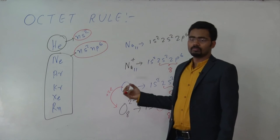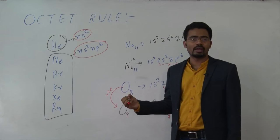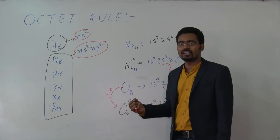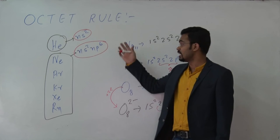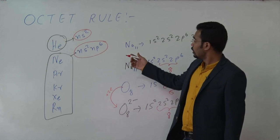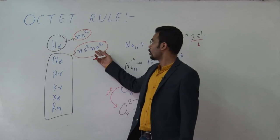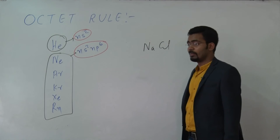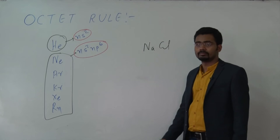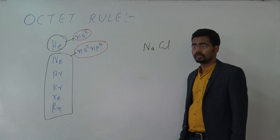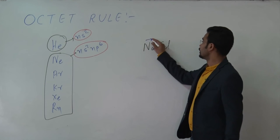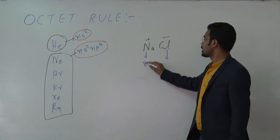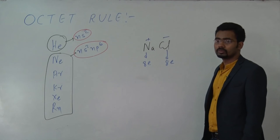So this is called the octet rule — any atom has a tendency to acquire a stable configuration by either gaining or losing electrons. Stable configurations in nature have eight electrons, or two for helium. For example, in NaCl, sodium forms Na⁺ and chlorine forms Cl⁻, and both achieve eight valence electrons.